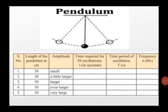There is one more experiment. In this we have to keep the length of the pendulum fixed at 30 centimeters but varying the amplitude. Measure the time required for 20 oscillations in each instance. Deduce the time period of oscillation and frequency of the pendulum in each case.